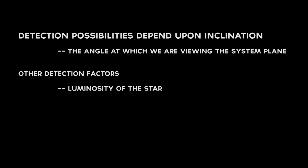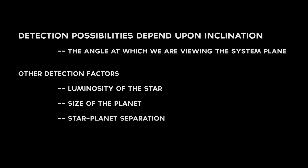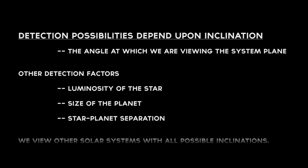What astronomers can detect, with different methods, depends very much upon the angle at which we are viewing the system plane, known as inclination. Detection also depends on other quantities such as the luminosity of the star, size of the planet, the star-planet separation, and the astronomical equipment used. Note that we view other solar systems with all possible inclinations, but this demonstration will focus exclusively on how inclination affects detection.